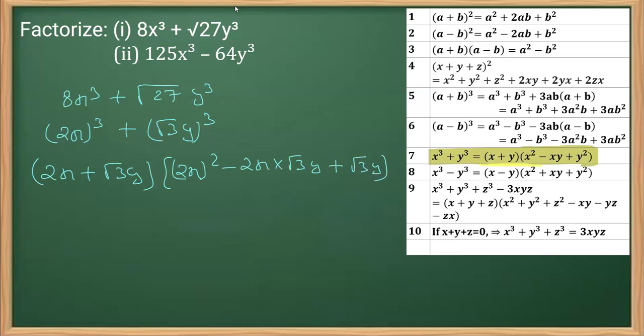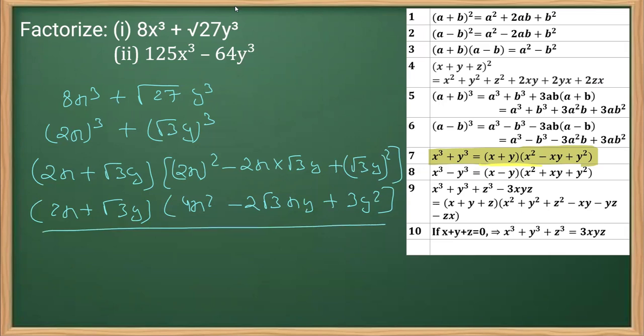Now we will simplify it a bit. Let's say I can write this (2x)² as 4x², this is 2√3xy. And you know that √3 squared is 3, is 3y², so √3 squared is √9, which is 3, and this is 3y². So this is the factorized form of the first part.